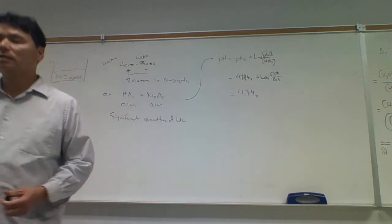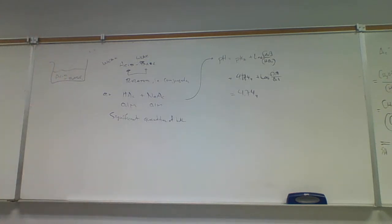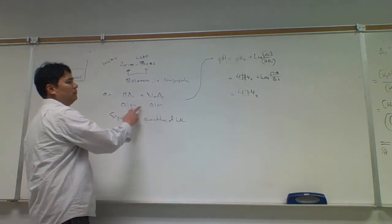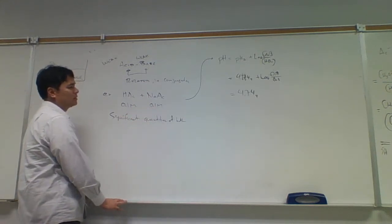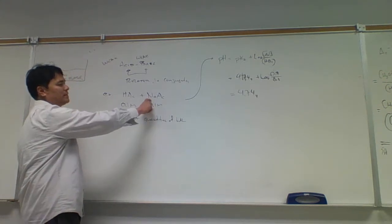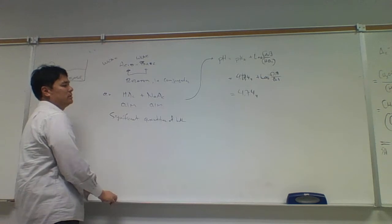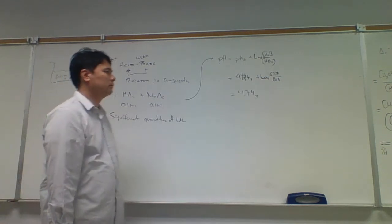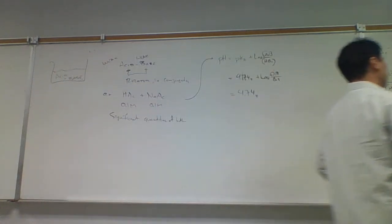That's for a 1-to-1 ratio of base to acid. But we tried to get a pH of 5, not 4.744. To get a pH of 5 from this, all we need to do is increase the amount of base. The more base there is, the higher the pH. That's what we did in the lab.